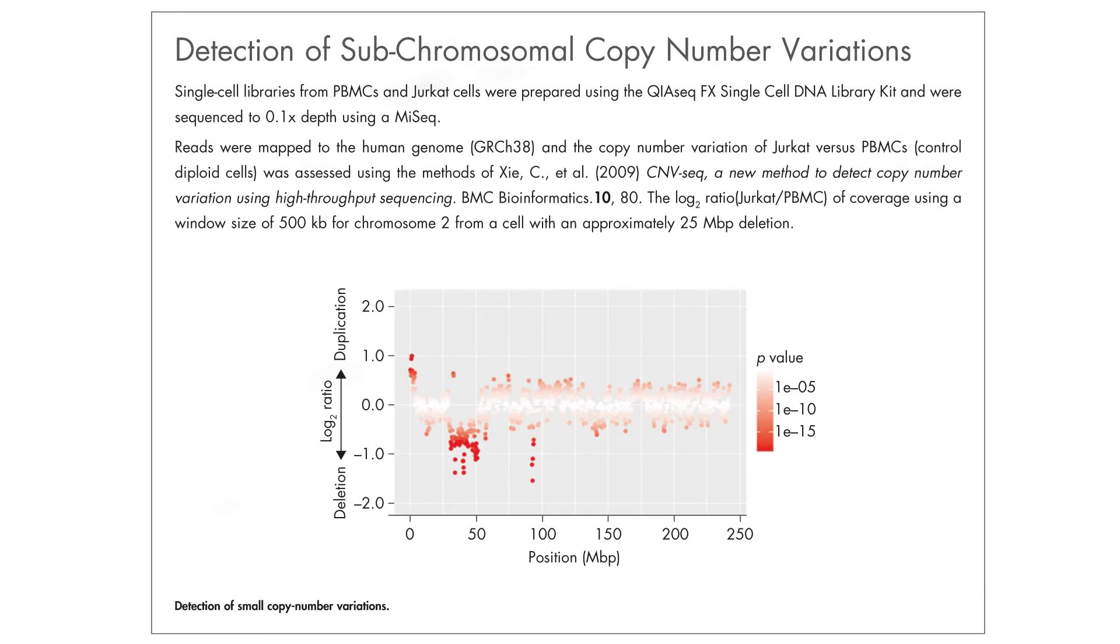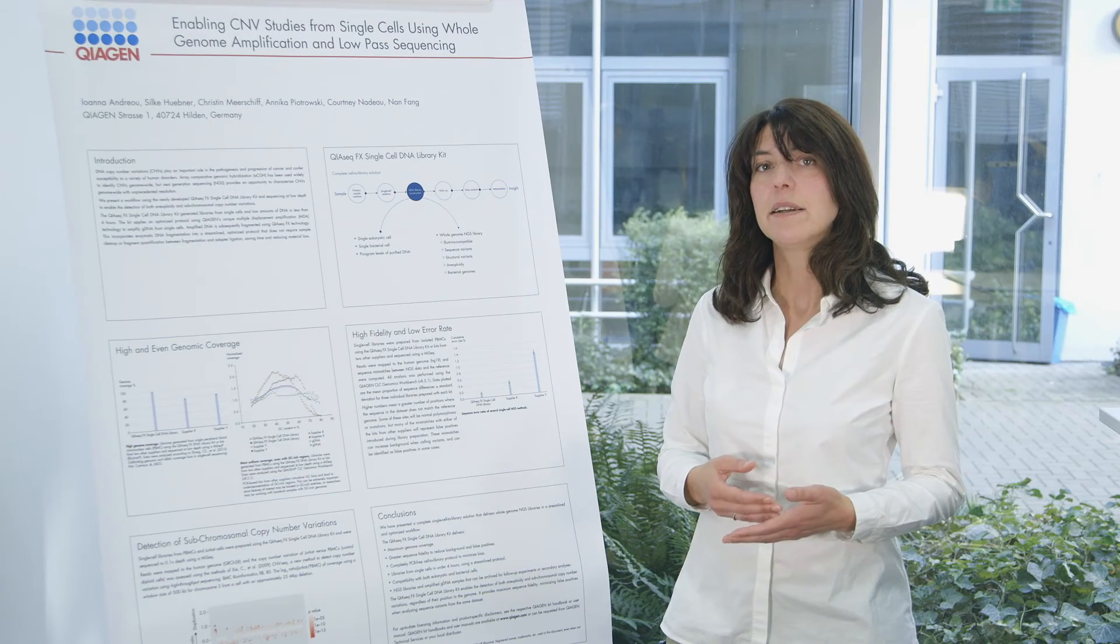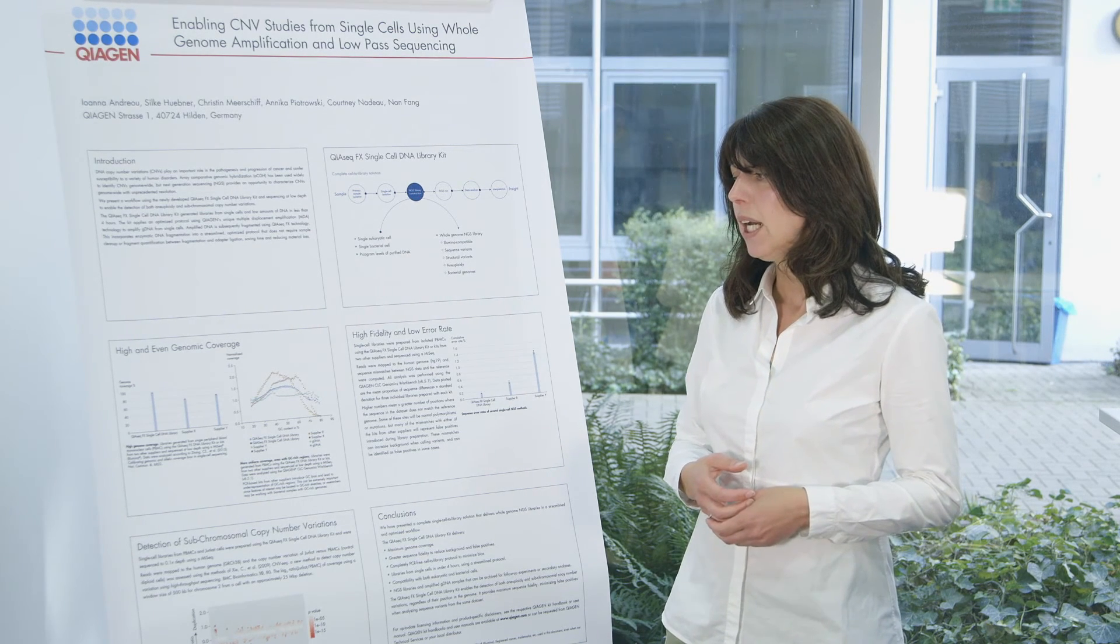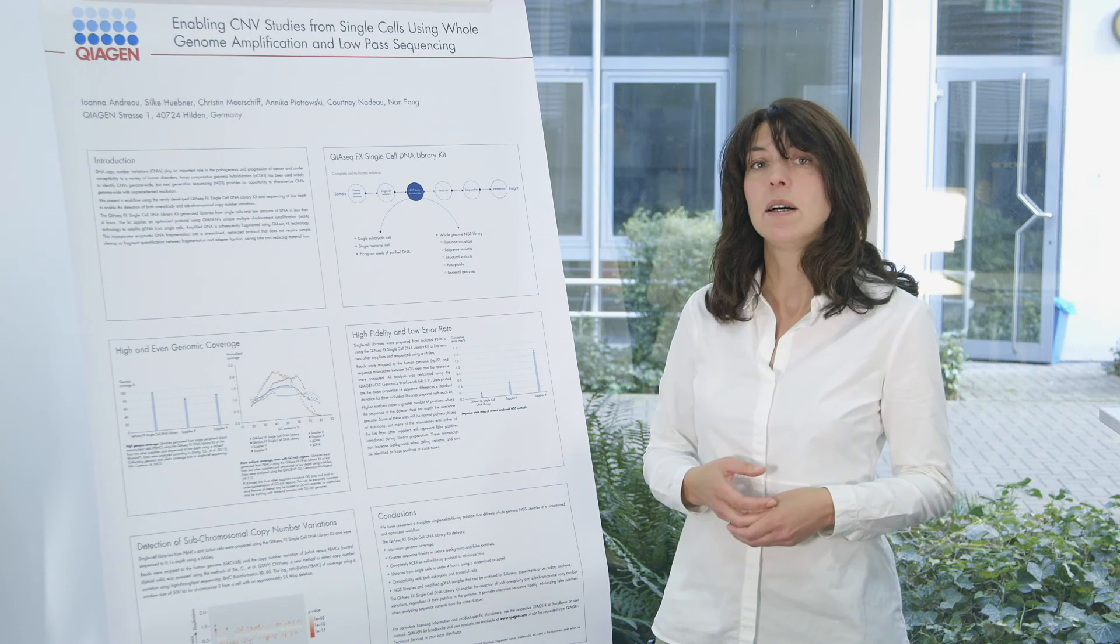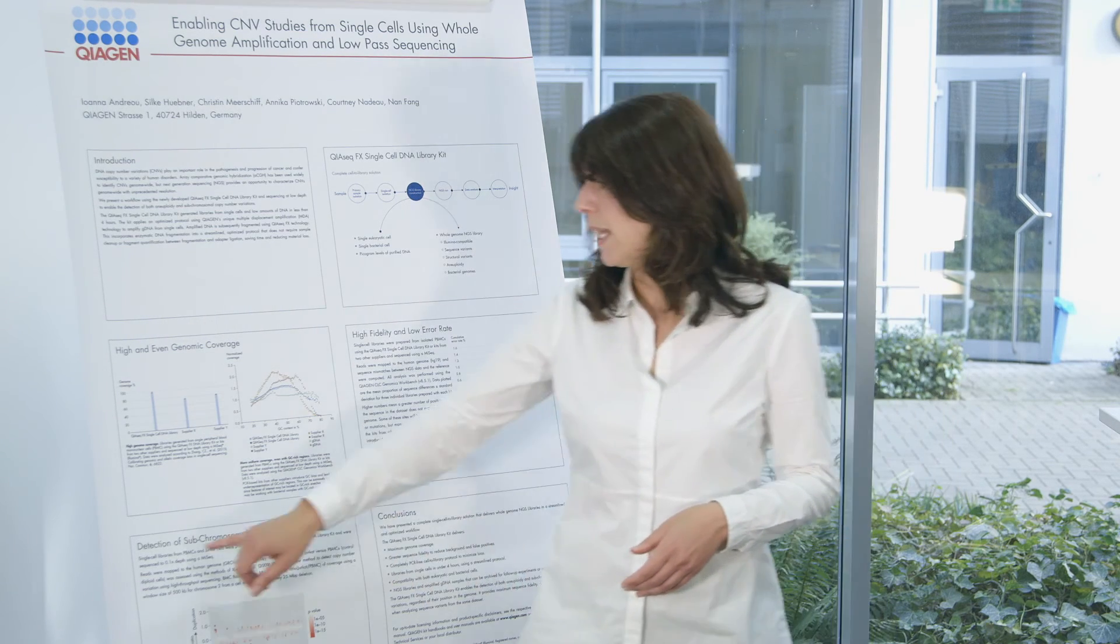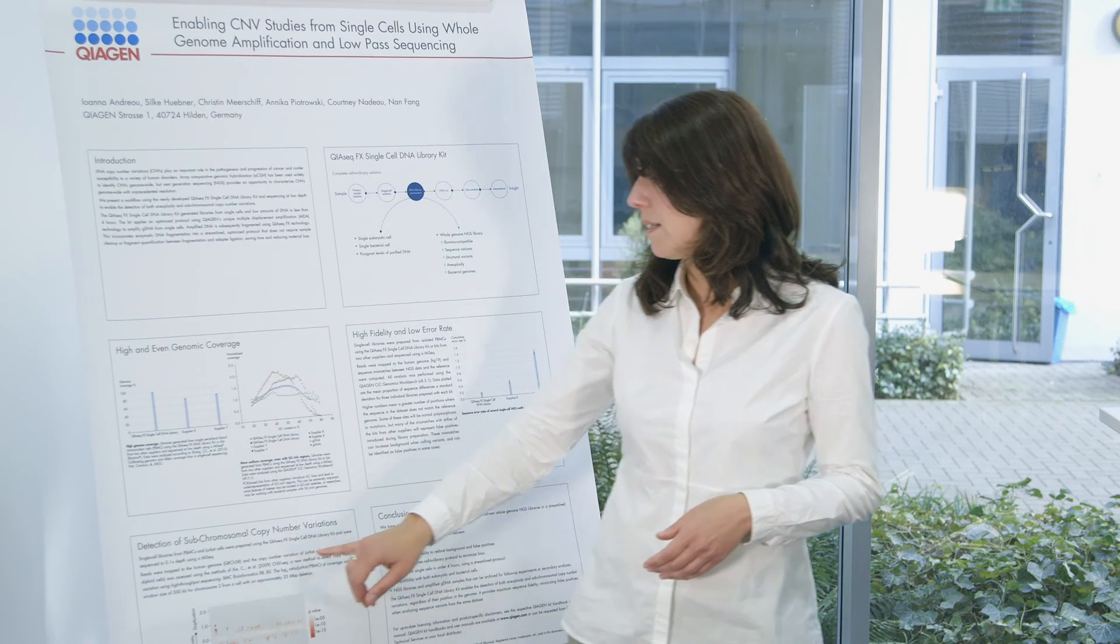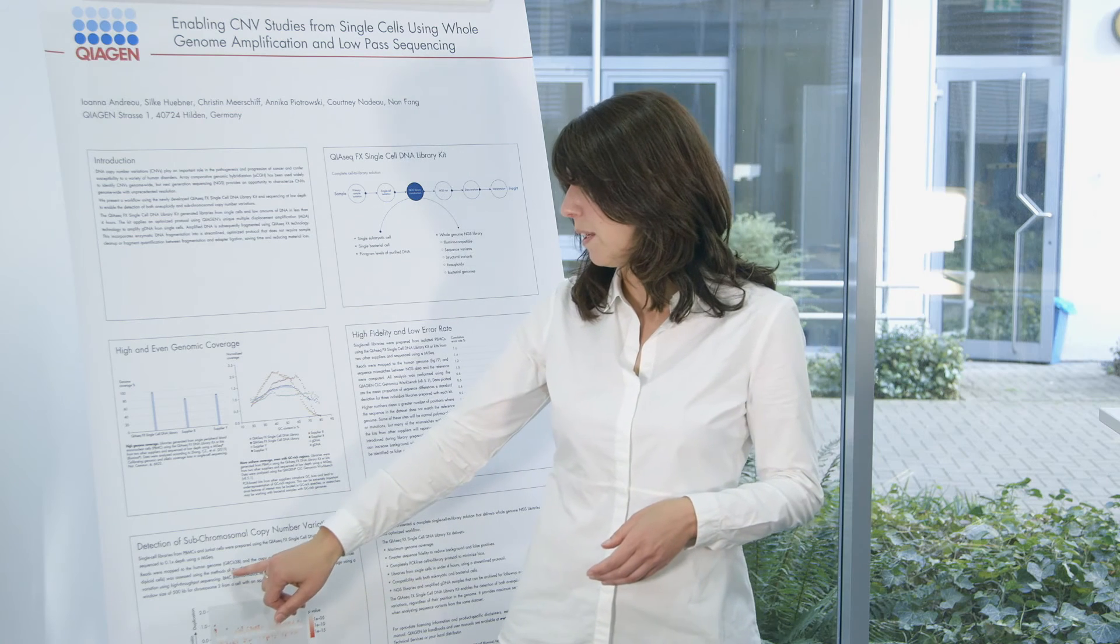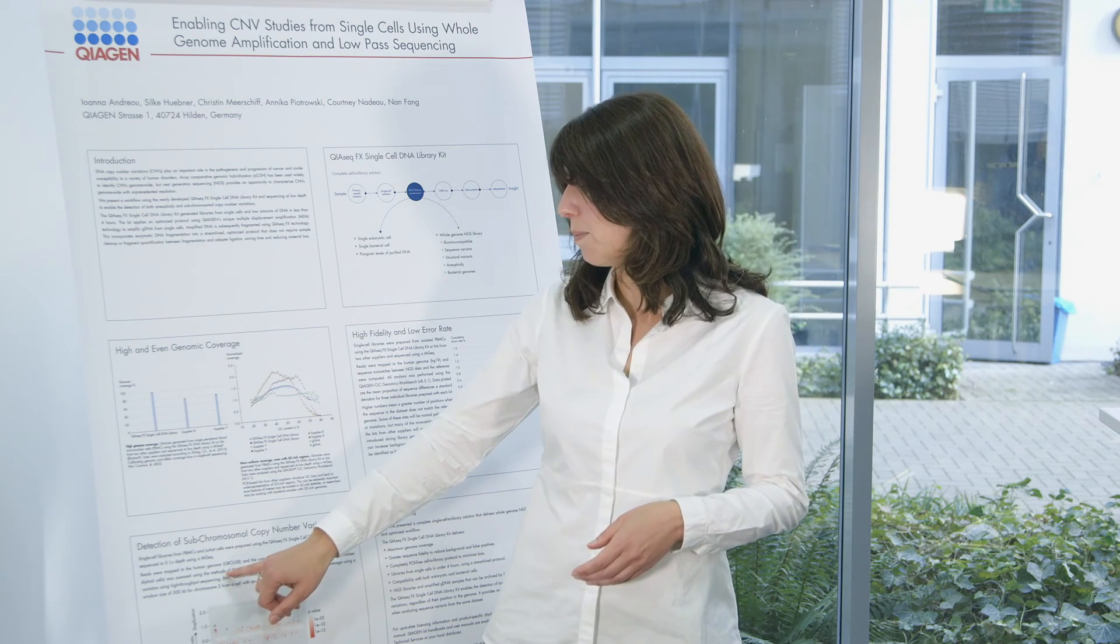Let us take a closer look now at how this kit is working when wanting to detect subchromosomal copy number variations. What we have done here is we have prepared libraries from single blood monocytes and Jurkat cells. The PBMC cells here are control cells because they are known to be diploid and we have sequenced them on MiSeq at low depth 0.1x, and after that we have analyzed the results using a script that we have found in the literature and it's published by Zhe et al.